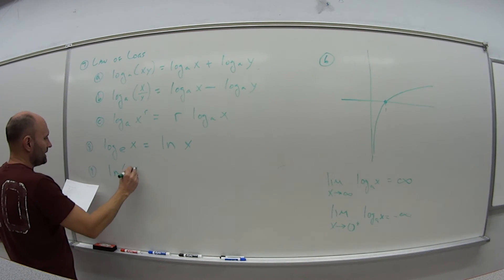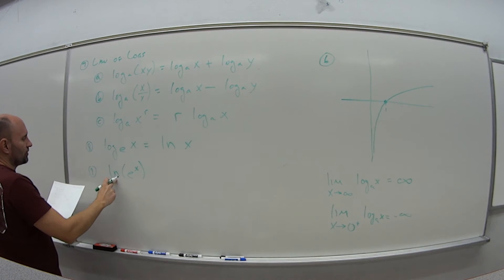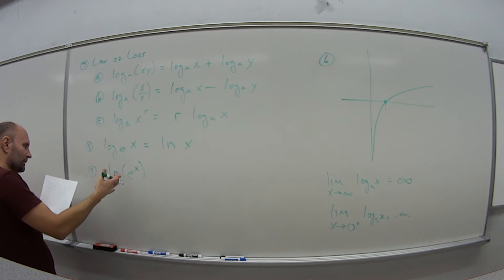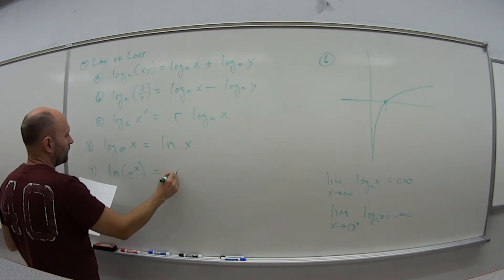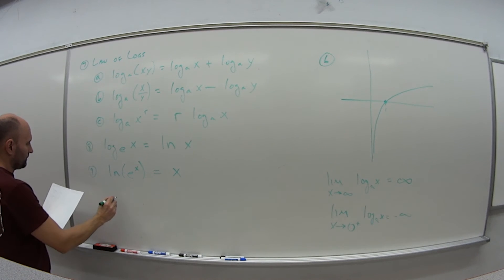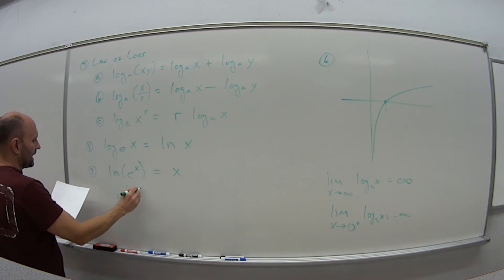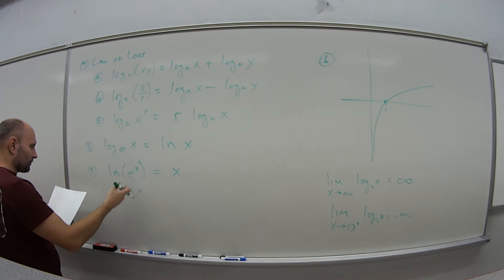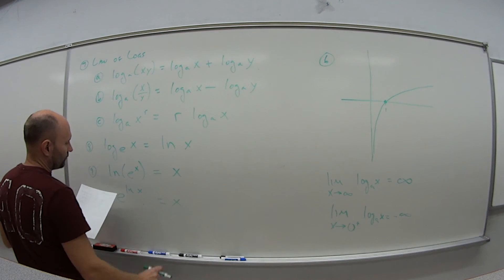Number 9: natural log of E to the X—well, these two functions, natural log and E, more or less cancel each other out, and this just becomes X. If we have E to the natural log of X, again, they sort of cancel each other out. This is just X.